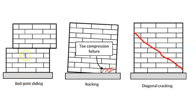Failure modes from settlement include sliding along the mortar bed — a shearing action. The whole wall could lean, causing compressive failure of units at the very bottom, and we can also see diagonal cracking going right through the units themselves.